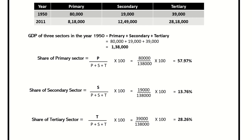Starting with 1950, as you can see, the final values of all these sectors have been added up to calculate the total GDP, which is 1 lakh 38 thousand. With this calculation we can individually analyze the share of each sector: the share of the primary sector is 57.97 percent, the share of the secondary sector is 13.76 percent, and the share of the tertiary sector is 28.26 percent.